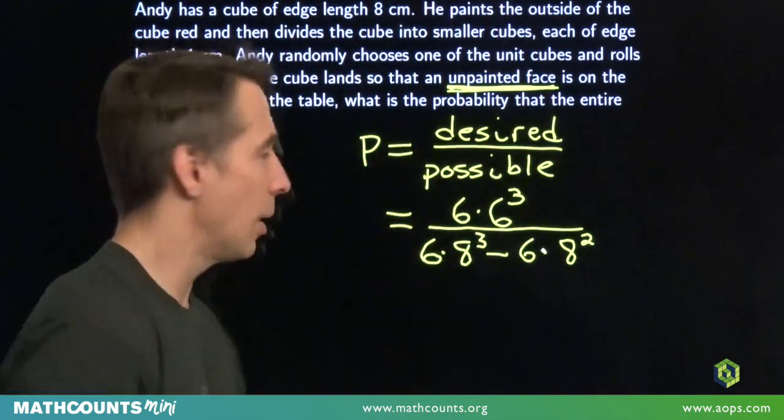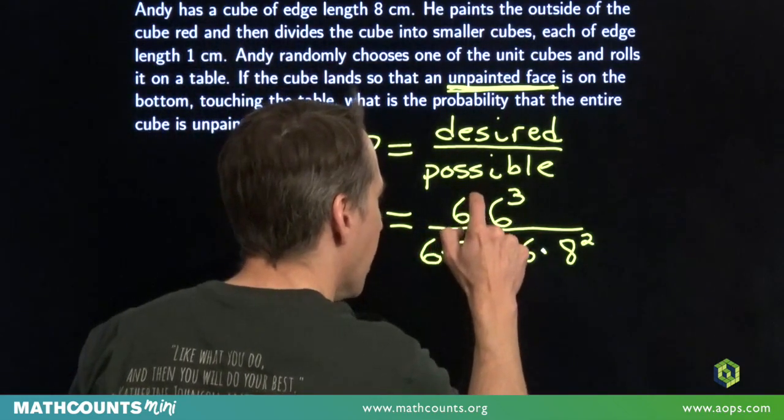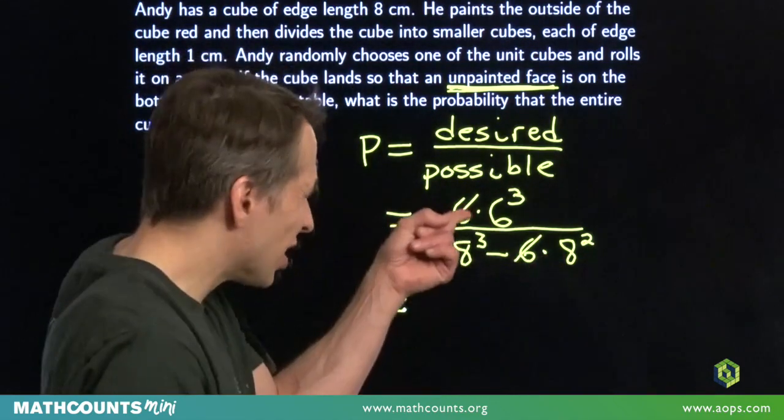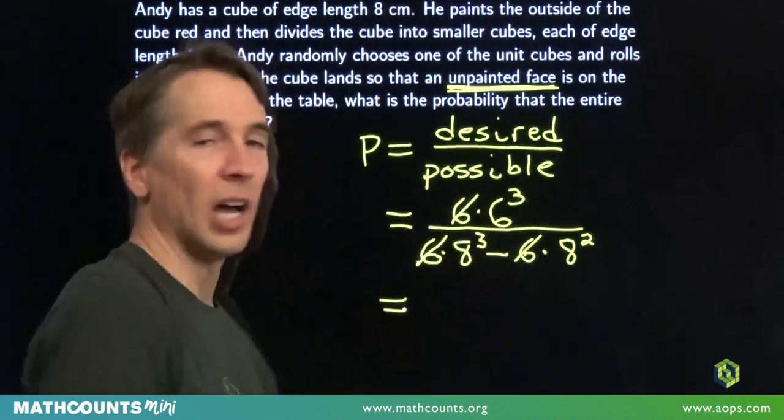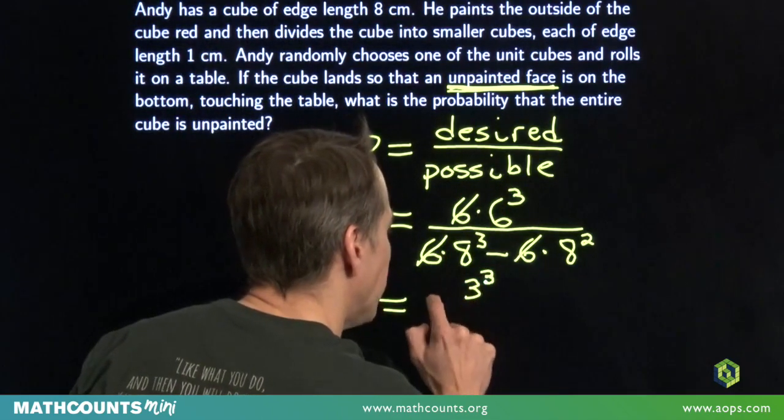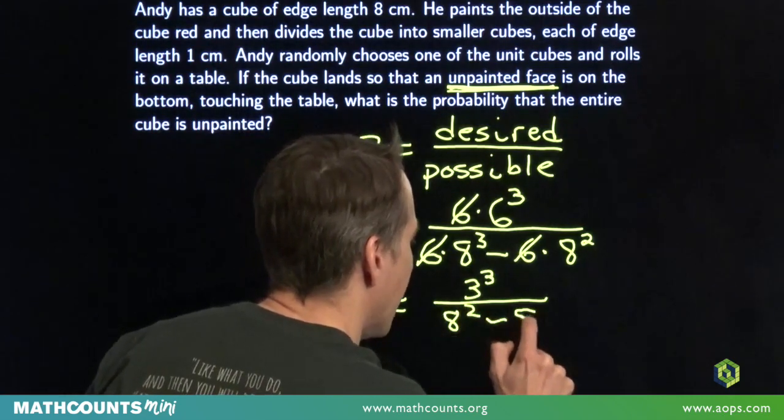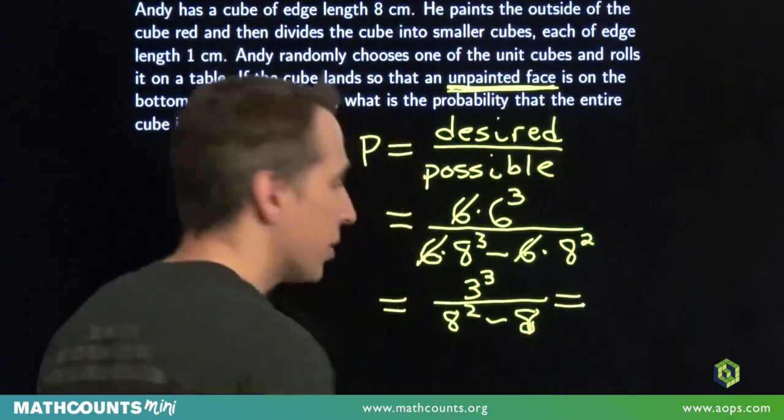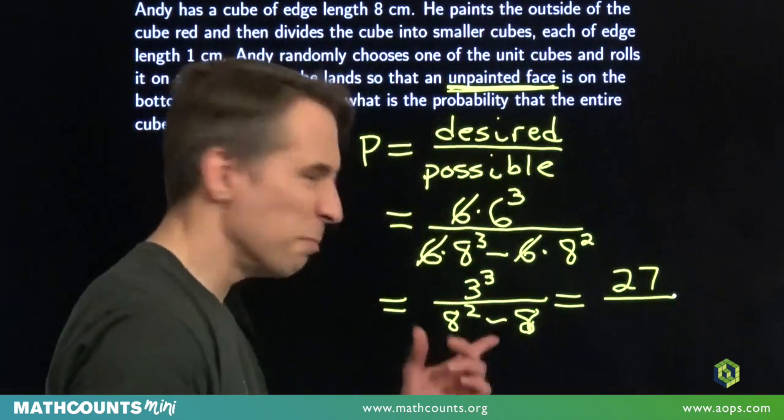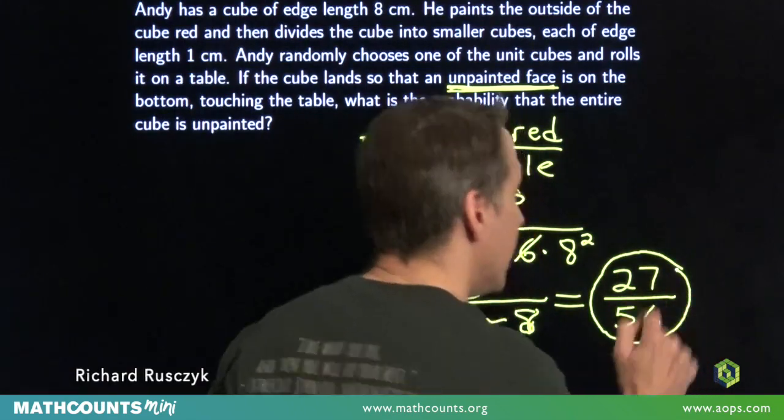So now, we just simplify this, and we get our answer. Now we could multiply all this out, but I'm going to be a little tricky here. I'm first going to knock out a factor of 6, and then, well I see a factor of 8 in all this, because I've got three 2's up there in that 6 cubed. I'm going to divide the top and the bottom by 8, and let's see, that'll leave me with 3 cubed on the top. And on the bottom I'll have 8 squared minus 8. And we calculate all that, 3 cubed gives us 27, and then 8 squared minus a pretty messy 8 gives us 56. And our probability is 27 over 56.